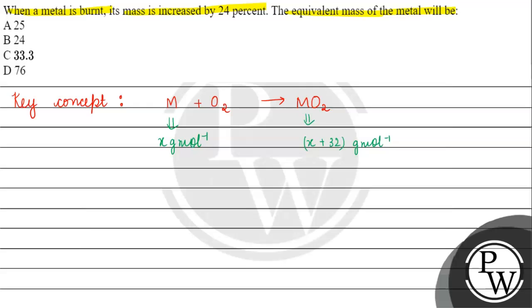In this question, the metal's mass increases by 24%. Suppose the mass of metal is 100 grams. The 24% increase is because of oxygen, so the mass of oxygen equals 24 grams.